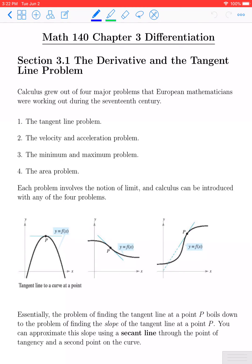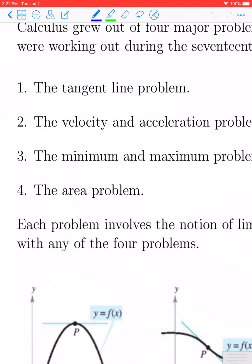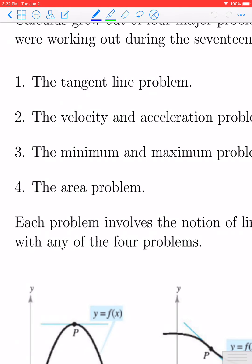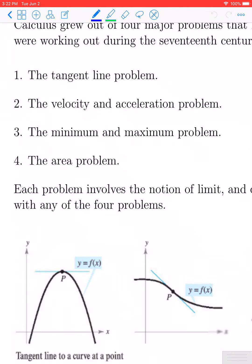Calculus grew out of four major problems that European mathematicians were working on during the 17th century — this is formally where the invention of calculus gets historically credited. Independently, aspects and ideas of it have been found all over the world, from Indian to Chinese, even going back to ancient Greek ideas. The fundamental beginning of calculus began with work on the tangent line problem, velocity and acceleration, the idea of locating minima and maxima, as well as finding the area of irregular shapes.